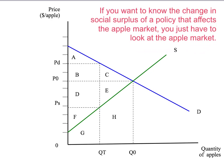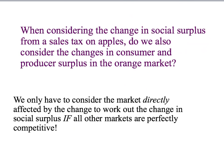So everything we've done up until now has been perfectly correct — if we make another assumption. That other assumption is not just that the apple market is perfectly competitive, but that all other markets — the orange market, the banana market, any other relevant goods and services — are also bought and sold in perfectly competitive markets. That's been a hidden assumption that allows us to concentrate on our simple demand and supply diagrams and get accurate measures for changes due to a change in government policy.